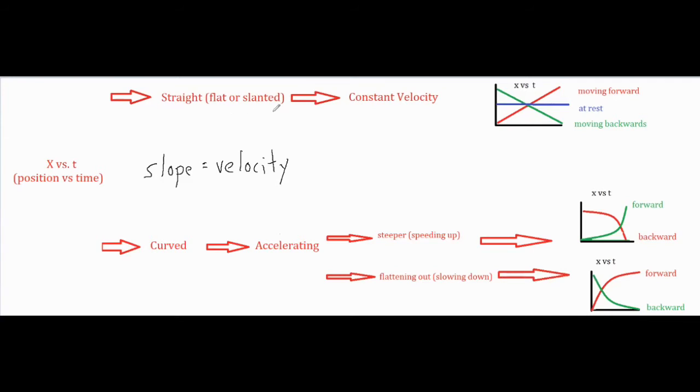If you take a look at our flowchart over here, if you have anything that's straight, which could be flat or slanted, that means it's going at a constant velocity.